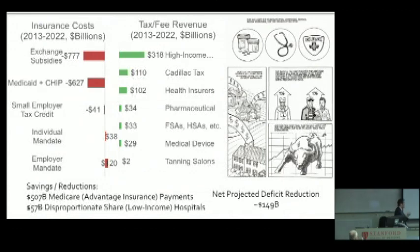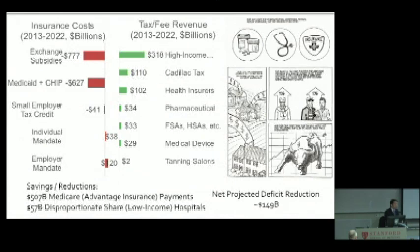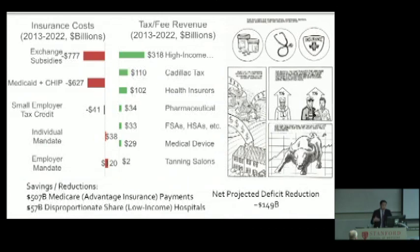Beyond that, you also need some taxes and revenues — so you tax health insurers, pharmaceuticals, and medical device companies. Those are all powerful lobbying groups, so how do you get a law passed that taxes them? The whole conceit is they were part of writing the law — they knew that more people are going to be insured, so they fully expect to make more money than they're going to be taxed. There's also the Cadillac tax, which keeps getting pushed back. Most of us get insurance through our employer and get a tax break by doing so, which can lead to aberrant behavior — people say, 'it doesn't cost me anything, I might as well get another MRI.' The Cadillac tax would impose a levy on excessively generous employer-sponsored plans, but it's extremely politically unpopular and keeps getting deferred.